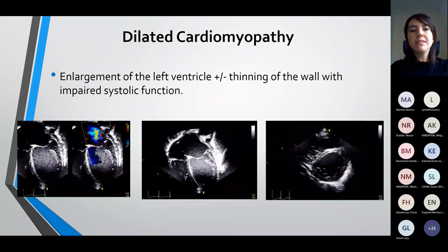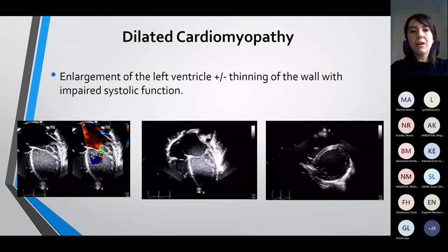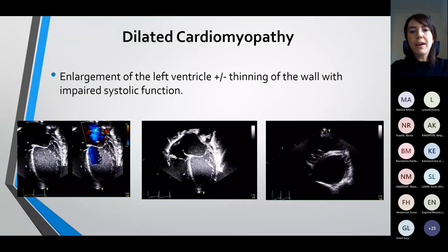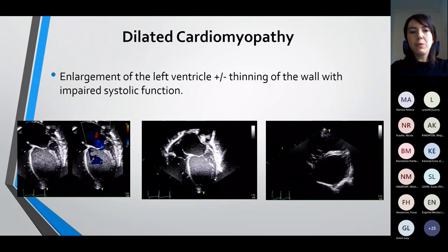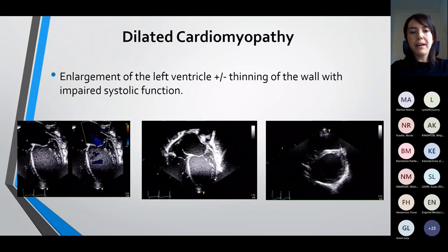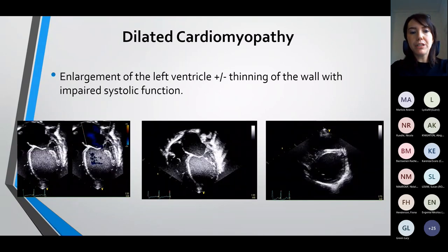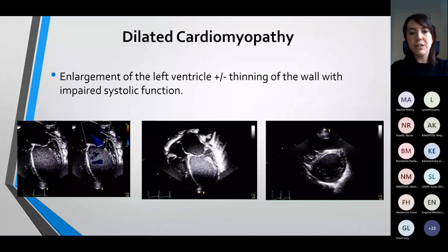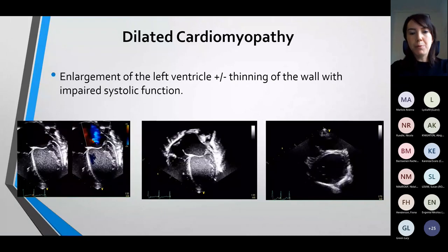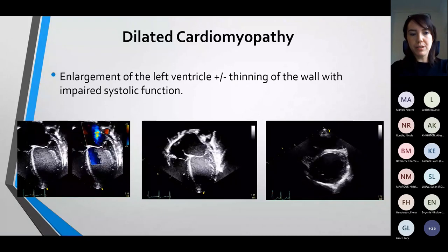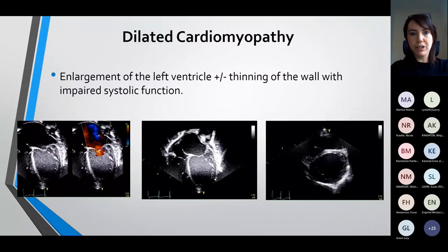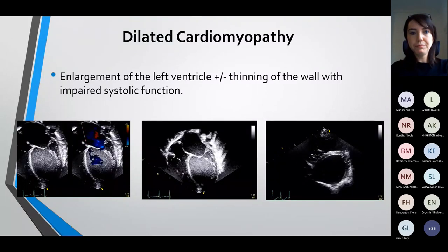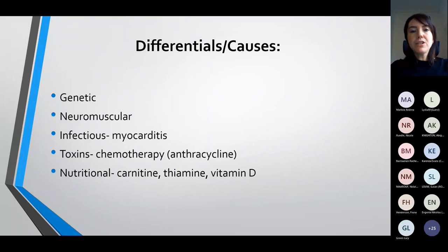The first one I'm going to talk about is dilated cardiomyopathy. This is enlargement of the left ventricle with or without thinning of the LV wall and impaired systolic function. You can see from these echo clips a very dilated LV and left atrium, poor function, with associated mitral regurgitation. The differentials or causes are multiple.